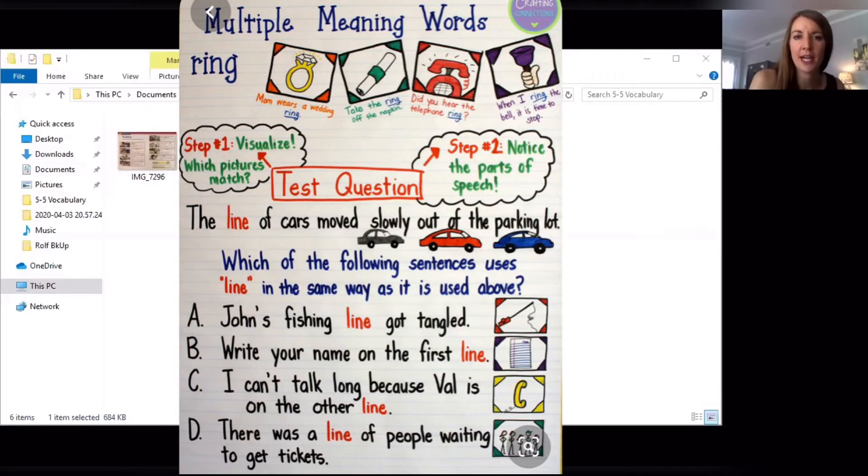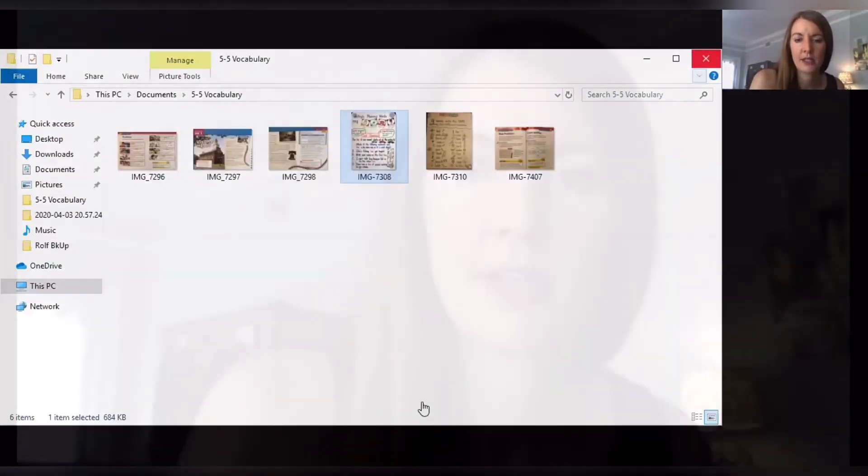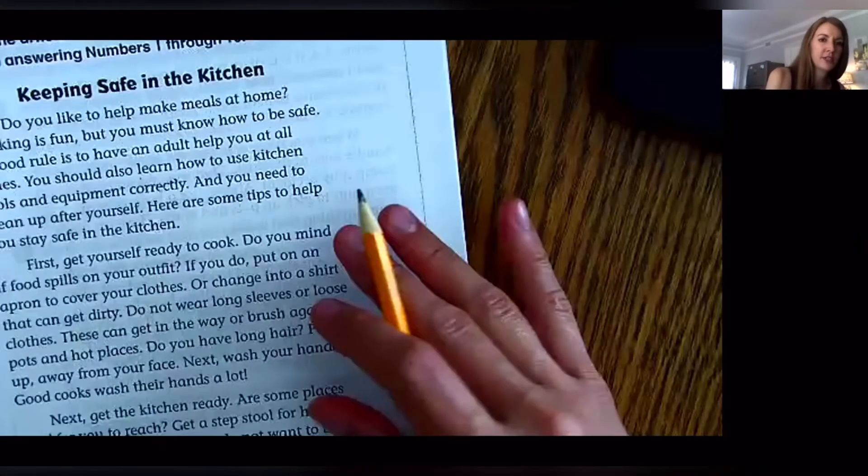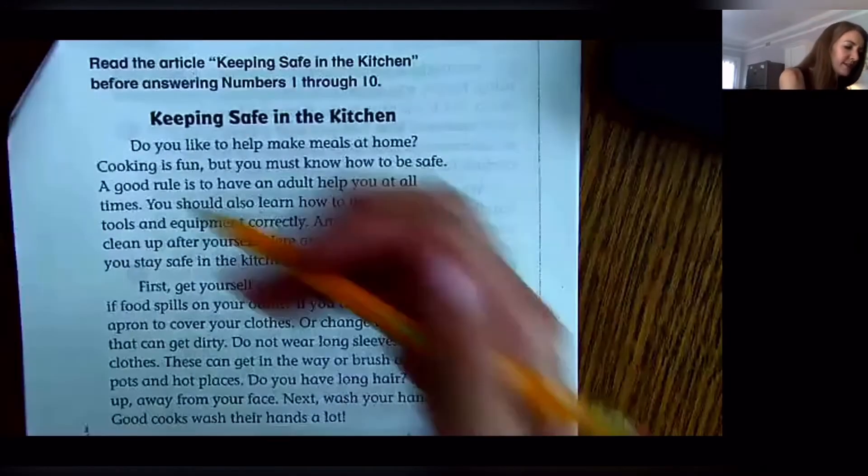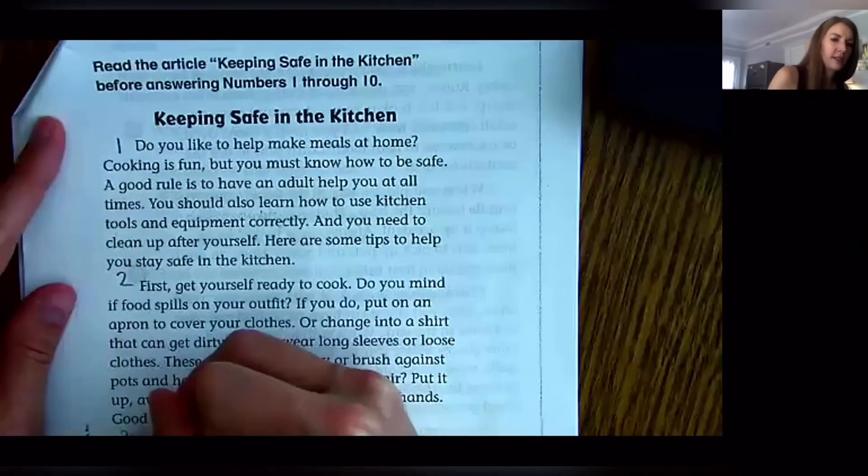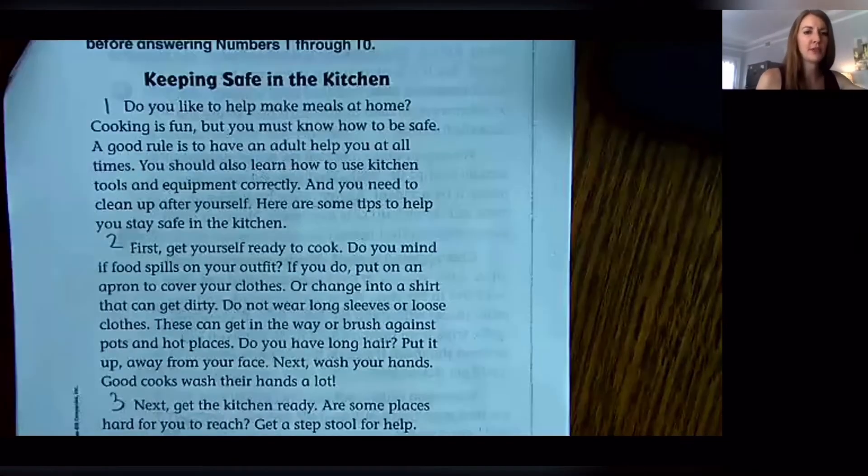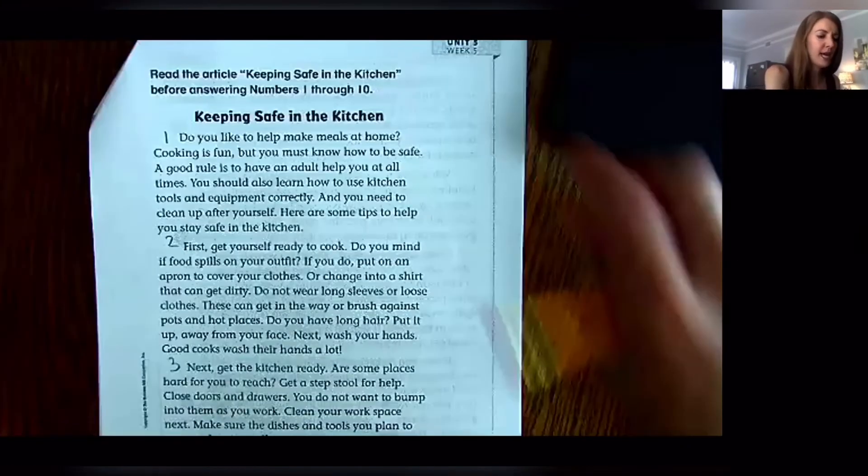So I'm going to go ahead and I'm going to now share my document camera so that I can read this cold read practice. It's called Keeping Safe in the Kitchen. Now I did not prep this ahead of time, but if I were you I'd still, I'm looking for you to still number your paragraphs one, two, three. So you number your paragraphs where you indent.